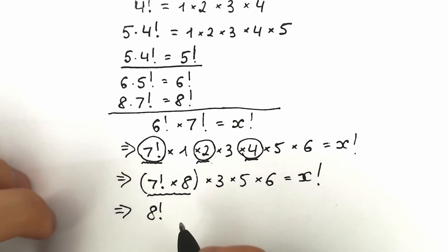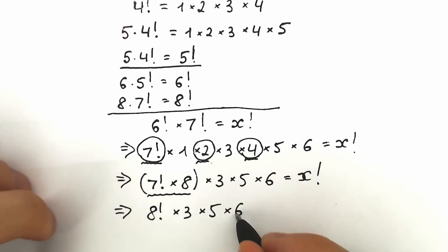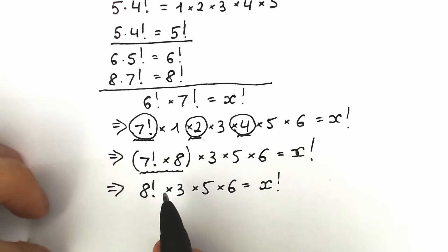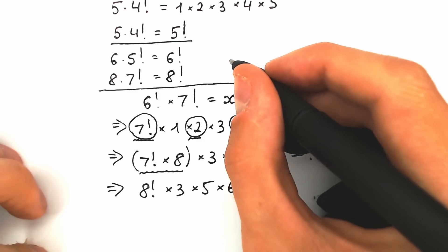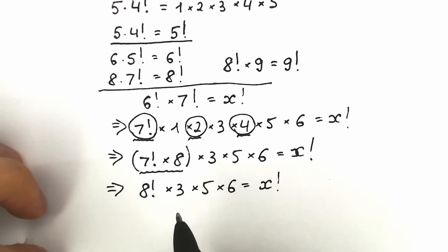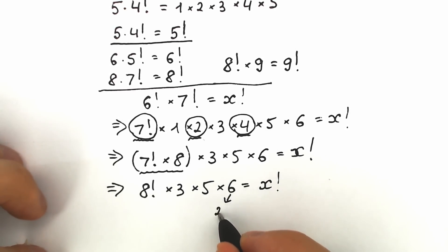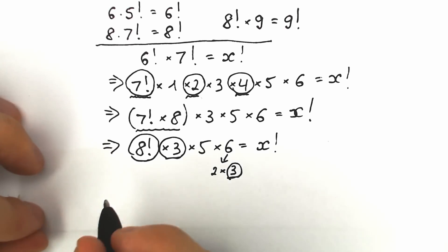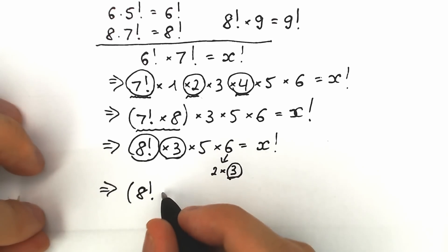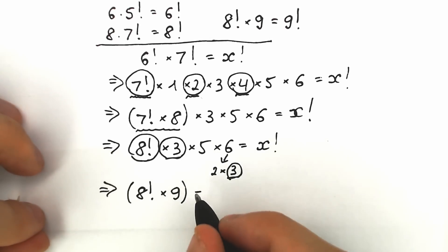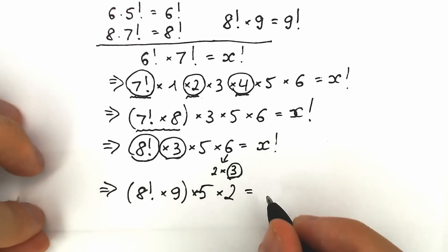So 7 factorial times 8 equals 8 factorial. As a result we have 8 factorial times 3 times 5 times 6 equal to x factorial. Now let's use the same logic: if we multiply 8 factorial by 9 we get 9 factorial. We can find 9 by rewriting 6 as 2 times 3, then multiplying that 3 by the other 3 already present. Grouping 8 factorial times 3 times 3 gives us 9, and we still have 5 and 2 remaining, so we have 8 factorial times 9 times 5 times 2 equal to x factorial.